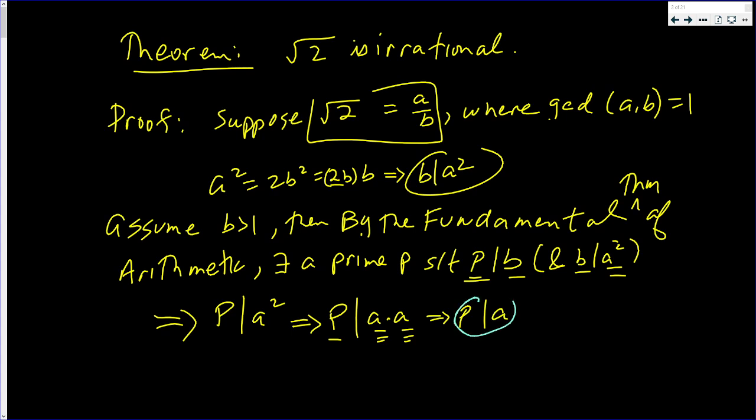Well, if p divides a and p divides b, then that implies that the GCD of a and b is at least p, and p is at least 2.